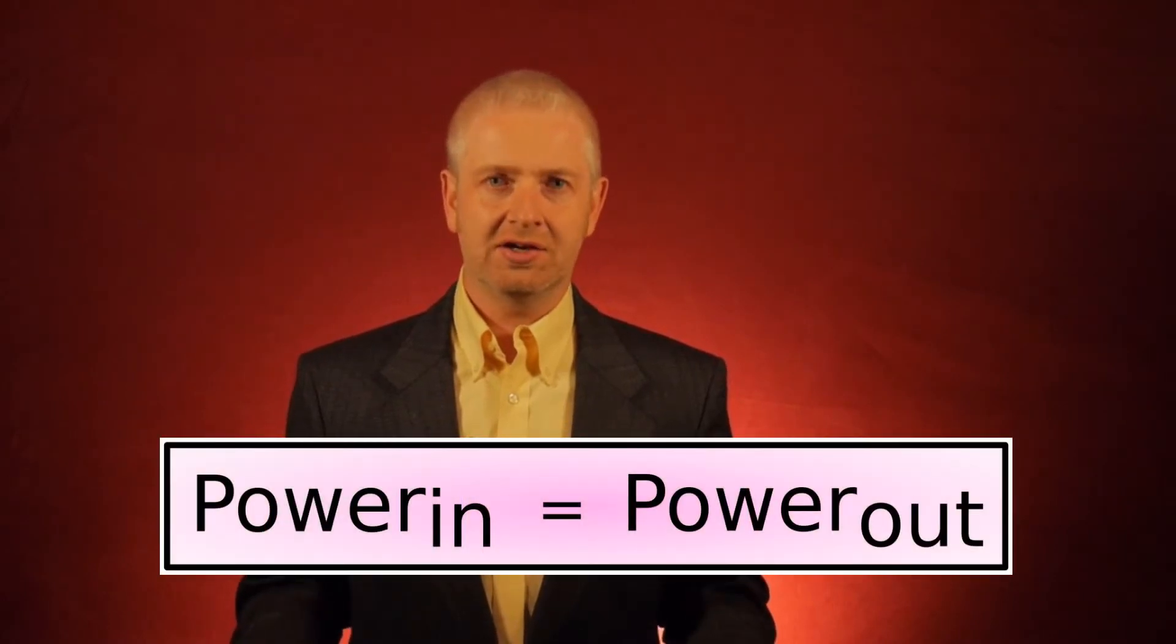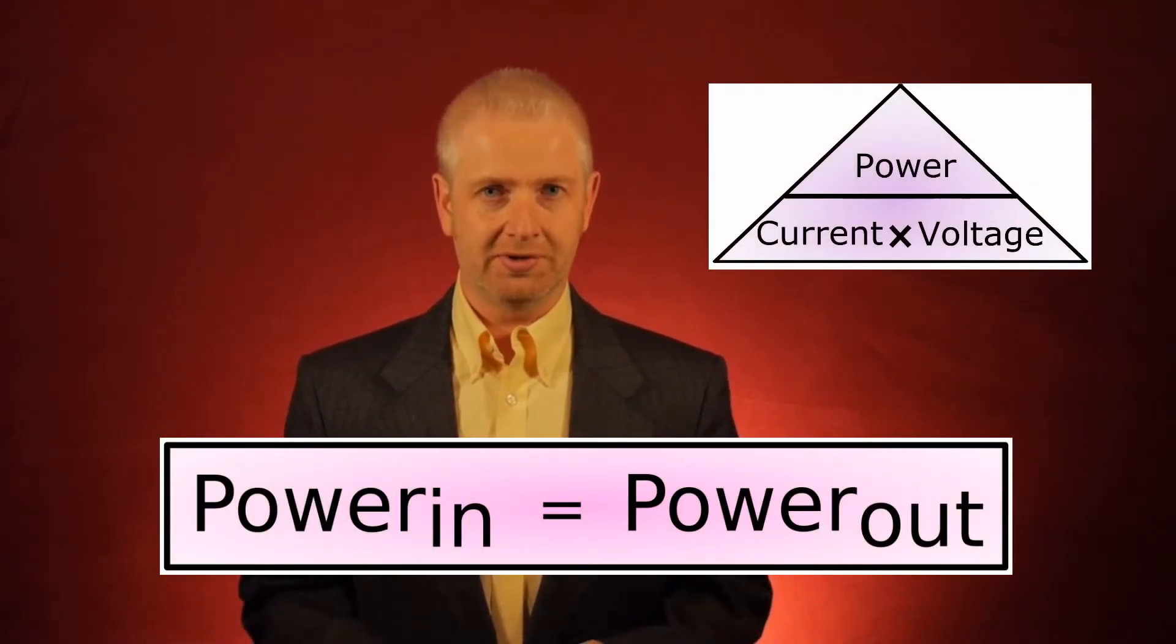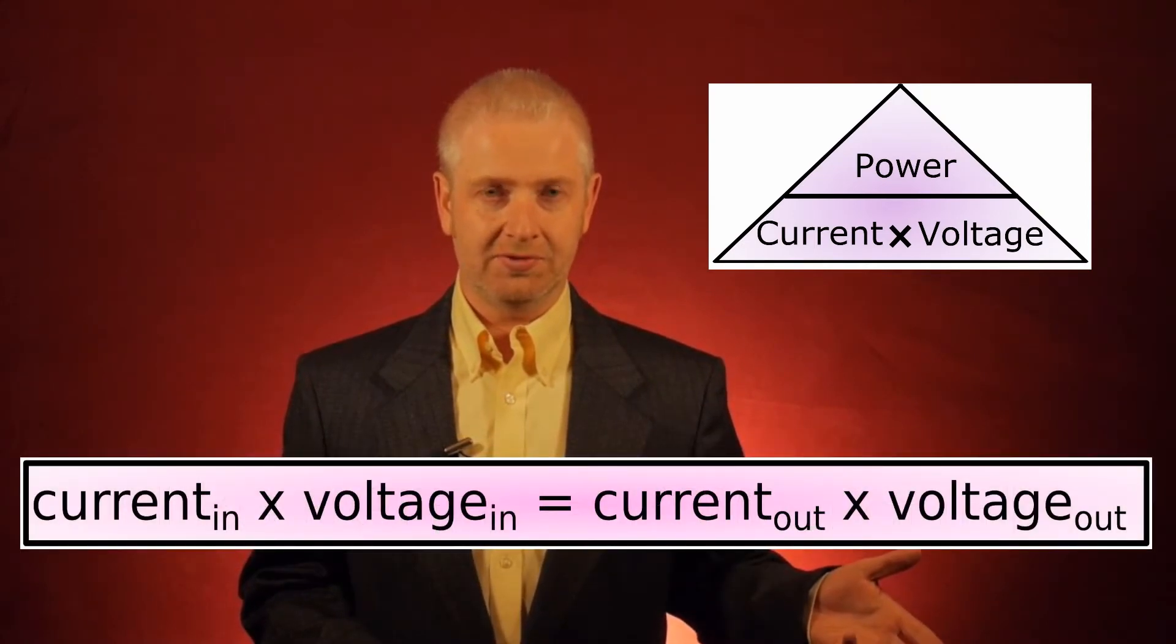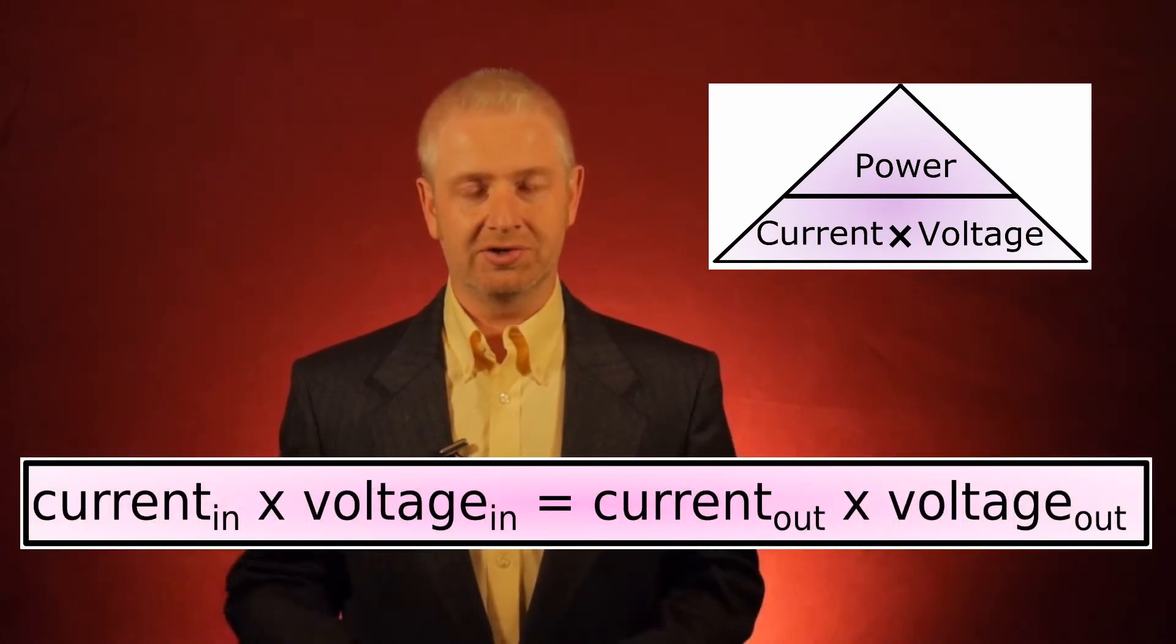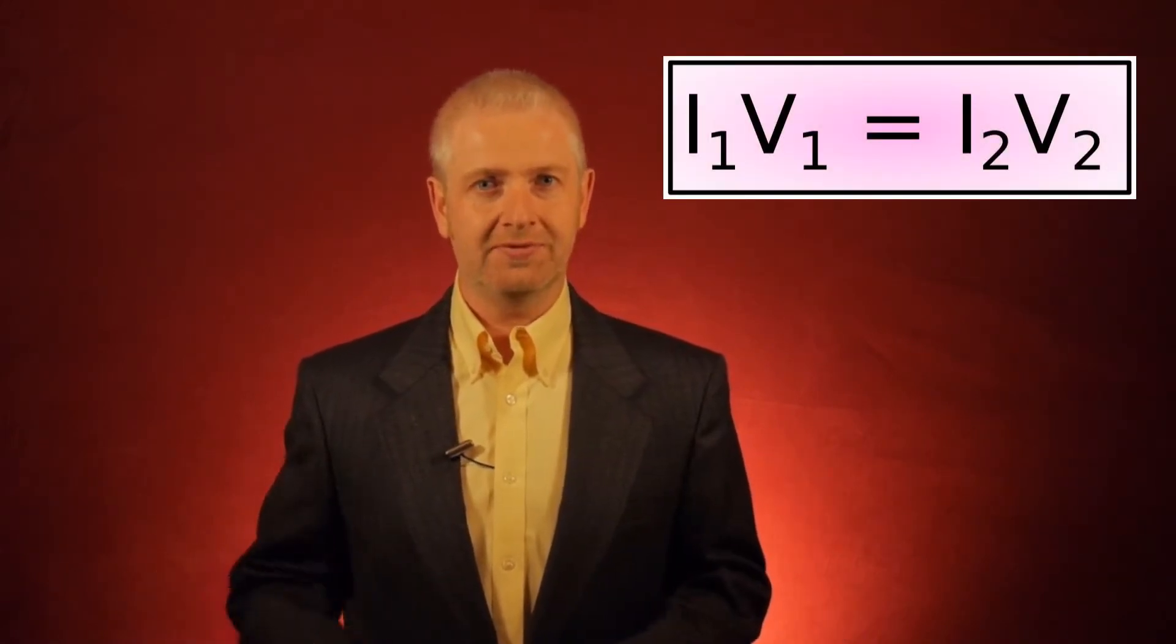So let's look at an example. Let's look at the equation for power in a transformer. Power in equals power out. Current times voltage in equals current times voltage out. So that's I1 times V1 equals I2 times V2.